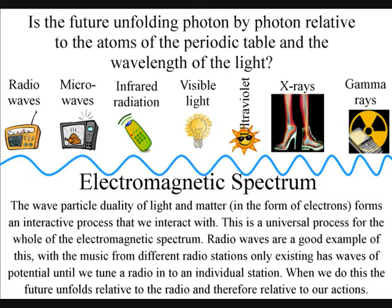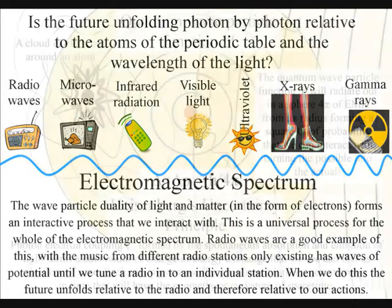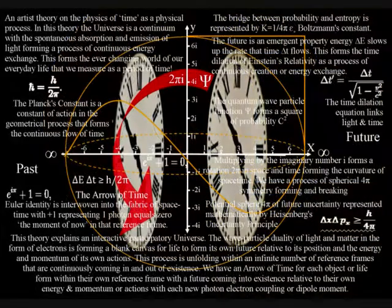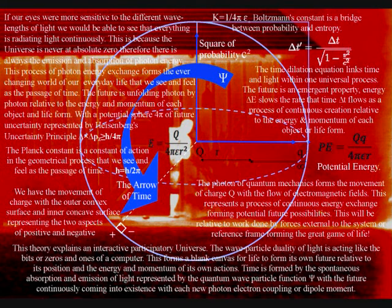When light waves come in contact with the electrons that surround the atom, it forms a photon-electron coupling, or dipole moment. These photon energy oscillations are the primary cause of the ever-changing world of our everyday life that we measure as a period of time. Because the universe is never at absolute zero, there is always the spontaneous absorption and emission of light with the movement of positive and negative charge.